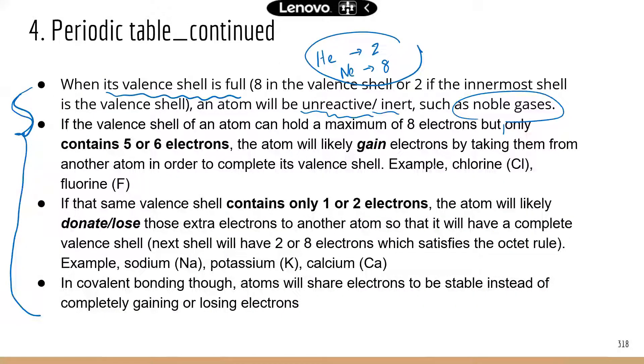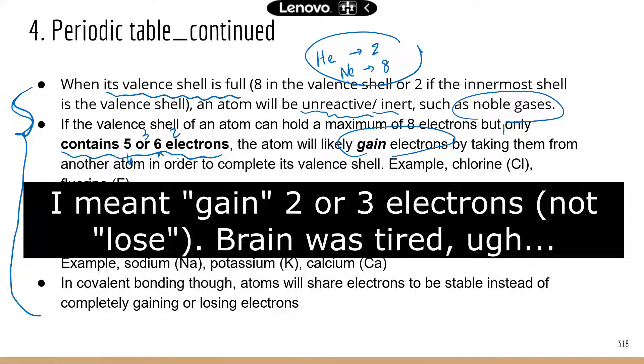They are stable and that's why they're called the noble gases, because they're very inert and don't like to react with other elements. Next scenario: if the valence shell of an atom can hold up to eight but only has five or six, then the atom is more likely to gain electrons. Think about this: which one is easier, gain three or two electrons, or lose five or six?